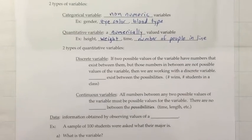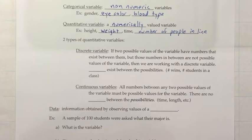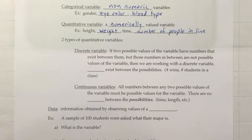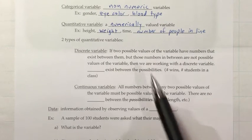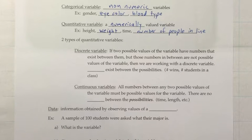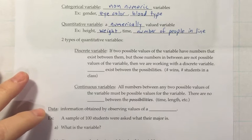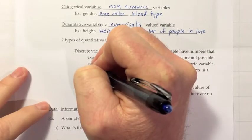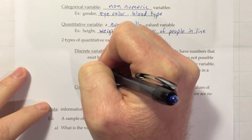There's the discrete, which is the one that has the gaps and the continuous, where all those gaps are possible. So, let's define those. If two possible values of the variable have numbers that exist between them, but those numbers in between are not possible values of the variable, then we're working with a discrete variable. In more plain language, we could say that gaps exist between the possibilities.